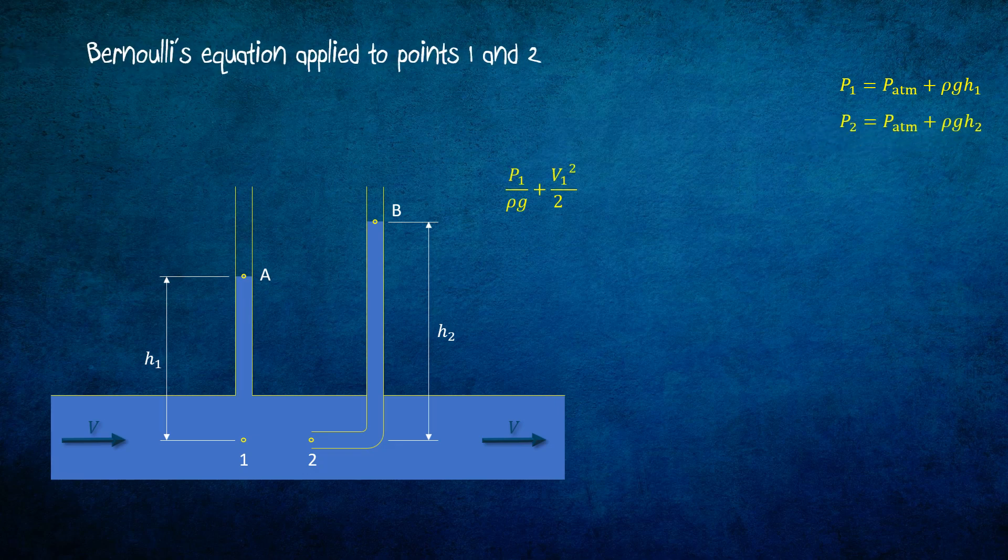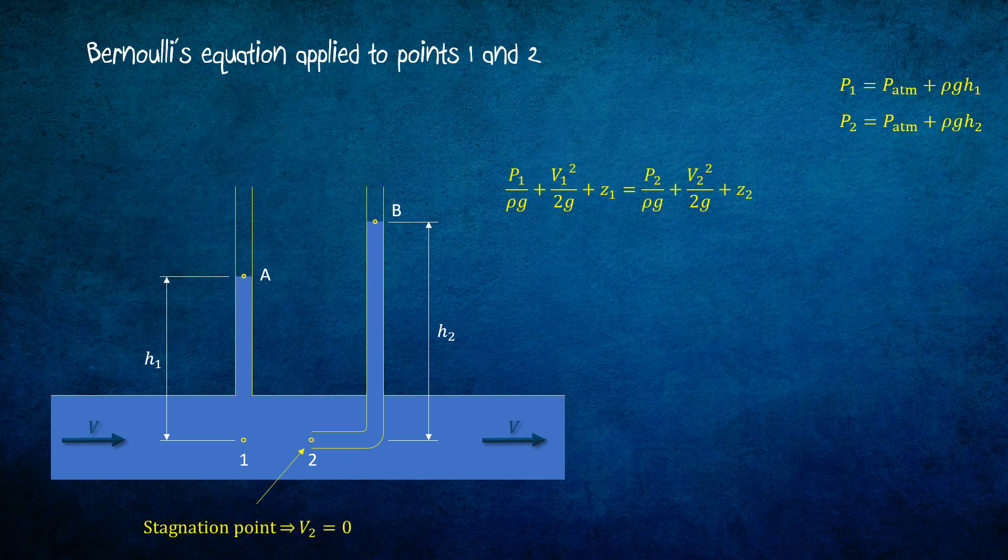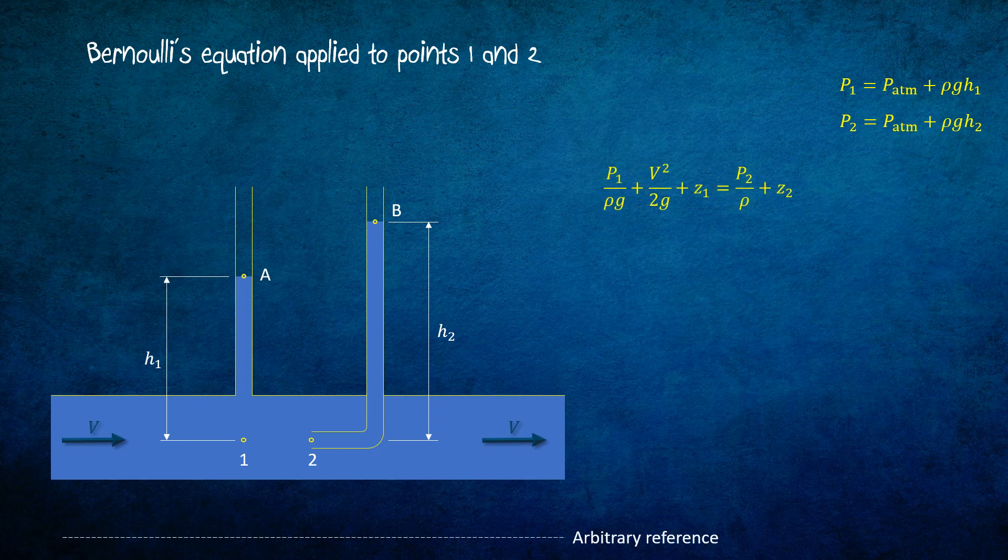Now we apply Bernoulli's equation to points 1 and 2. The velocity is zero at the stagnation point 2. Hence, we cancel V2 from the equation. We assume the velocity of the flow to be uniform. Let's draw an arbitrary reference line. As it is a horizontal flow, the elevation of point 1 is the same as point 2. Hence, Z1 and Z2 cancel each other.